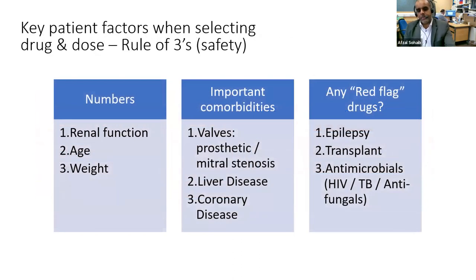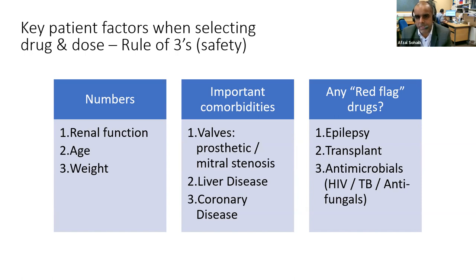When assessing a patient for anticoagulation, there's quite a lot of information and each DOAC has its own nuances. I put it into rules of threes: three numbers — renal function, patient's age (key cutoff around 80), and patient's weight; three important comorbidities — valve disease (mitral stenosis or metal valves means warfarin), liver disease, and coronary disease; and three groups of red flag drugs — anti-epileptics, transplant medications, and antimicrobials including TB drugs, HIV medications, and antifungals.